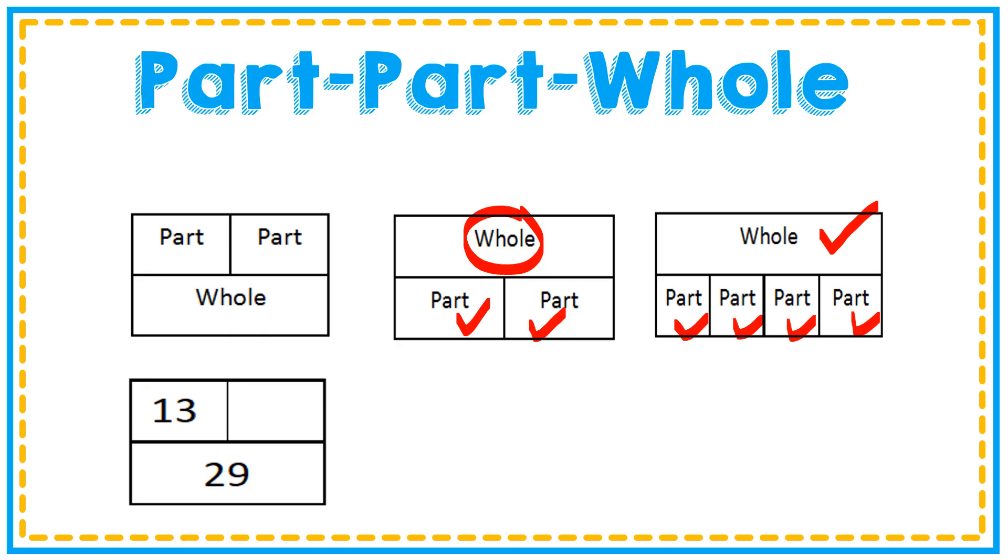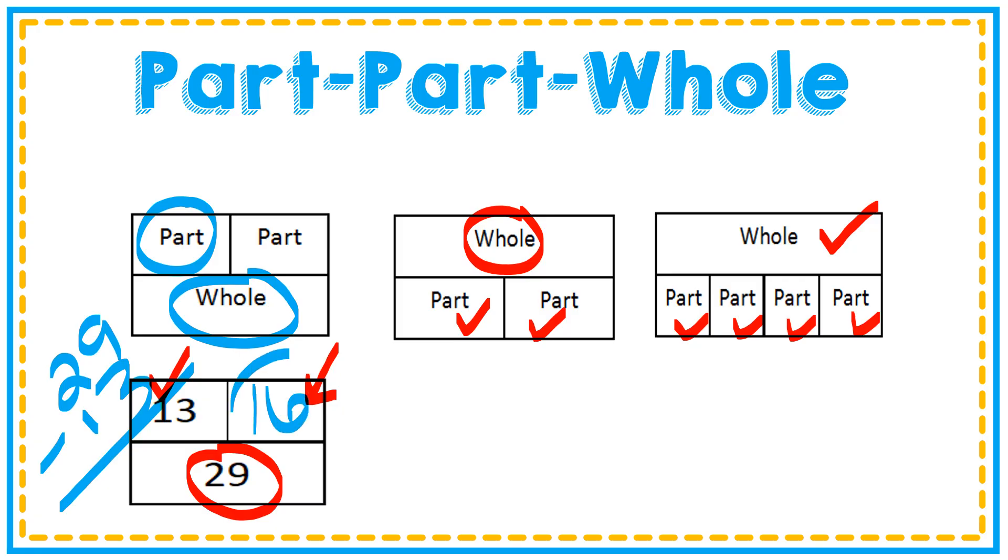Here's a part-part-whole relationship. You can see that my whole is 29, the part is 13, and I'm missing this part here. In this case, you're probably going to subtract. What you need to watch out for when you work with these models is: are you missing a part, or will you be trying to find the whole? In this case, I'm going to take 29, subtract 13, and when I do that, I get 16. So 16 is my missing part.